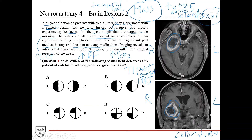The suspicion is that this is a brain tumor — it could be a metastasis from an undiagnosed primary cancer, or a primary brain tumor such as a glioblastoma. The question asks: which visual field defect is this patient at risk for developing after surgical resection of this temporal lobe mass? To answer this, we need to go through the visual pathway and identify which components travel through the temporal lobe and could be affected by surgery.